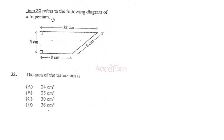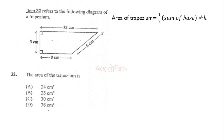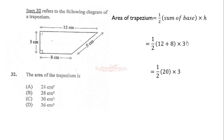Item 32 refers to the following diagram of a trapezium. We are finding the area of this trapezium. The area of a trapezium is half times the sum of the bases times the perpendicular height. The perpendicular height is three centimeters and the bases are 12 centimeters and 8 centimeters. So 12 plus 8 equals 20, and half of 20 is 10, times 3 gives 30 centimeters squared. The correct answer is C.